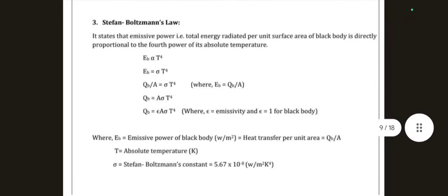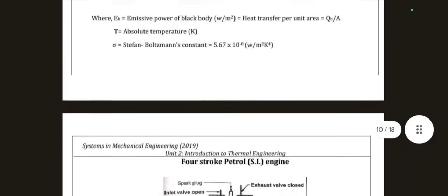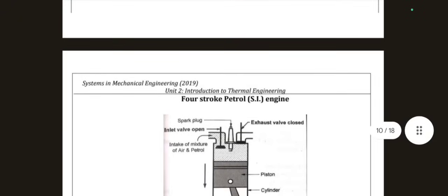The Stefan-Boltzmann law is for radiation. It states that emissive power — the total energy radiated per unit surface area of a black body — is directly proportional to the 4th power of its absolute temperature. E_B ∝ T⁴, giving Q_B = ε·A·σ·T⁴, where E_B is emissive power of the black body, T is absolute temperature, and σ is the Stefan-Boltzmann constant.